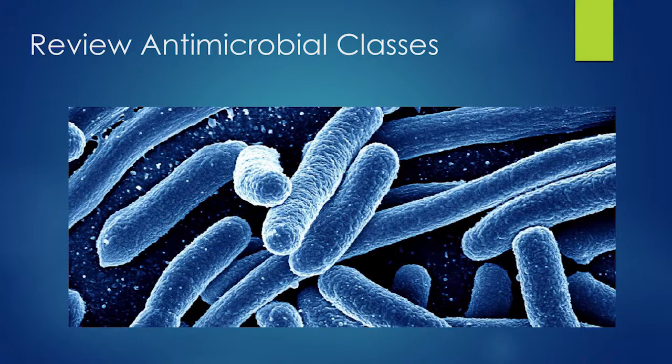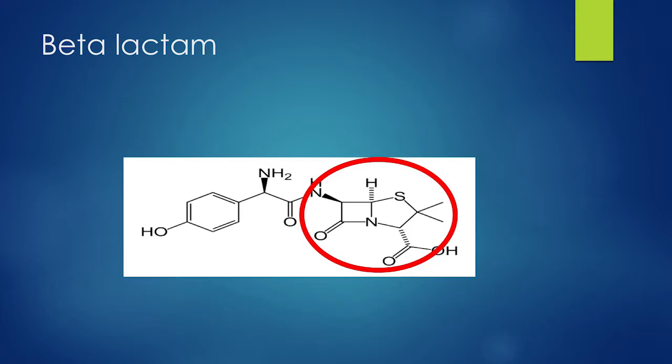Now jumping into specific antibiotic classes. Beta-lactams all share a core beta-lactam ring structure — a nitrogen and a carbon double-bonded to an oxygen — which is the active part. This ring opens up and binds to the penicillin-binding proteins of the bacterial cell wall. What separates penicillins from cephalosporins and carbapenems are different ring structures and side chains.